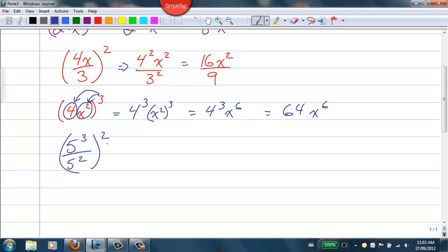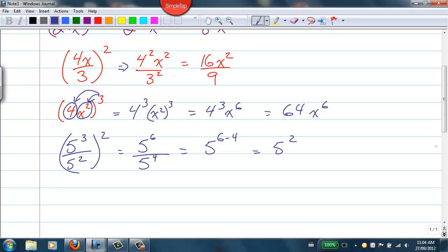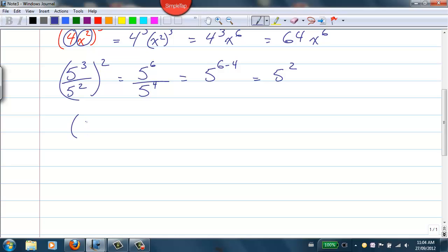Same thing with a quotient. 5 cubed over 5 squared, all to the power of 2. Our bases are the same, and if we apply this law, we could go 3 times 2 to get that 6, 2 times 2 to get 4, and then subtract the exponents because of the division to get 5 to the 2.